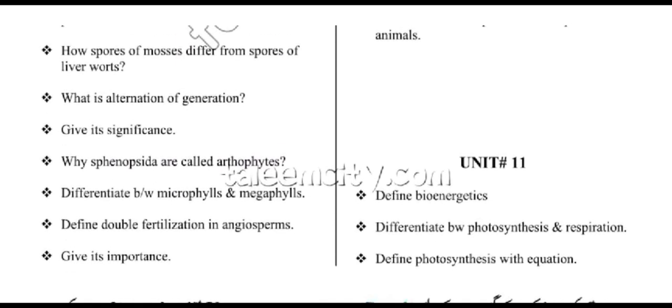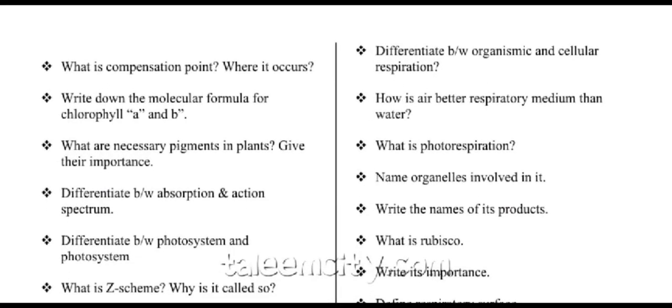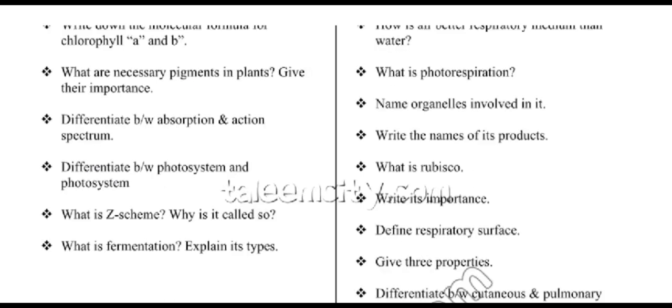From unit number eleven, we have: define bioenergetics; differentiate between photosynthesis and respiration; define photosynthesis with equation; what is compensation point and where it occurs; write molecular formula of chlorophyll A and B; what are the necessary pigments in plants and their importance; differentiate between absorption and action spectrum; differentiate between photosystem 1 and photosystem 2; what is the Z scheme and why is it called so; what is fermentation — explain its types.